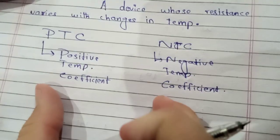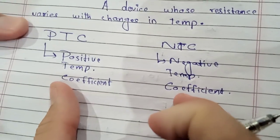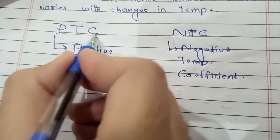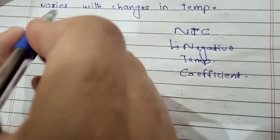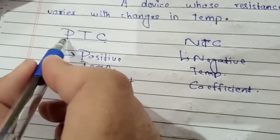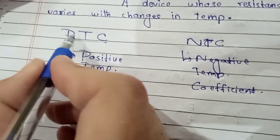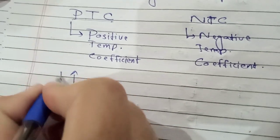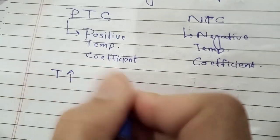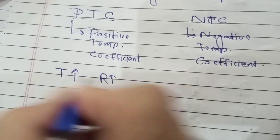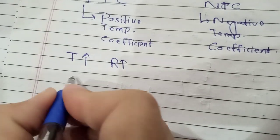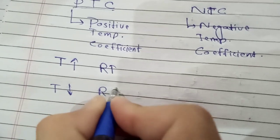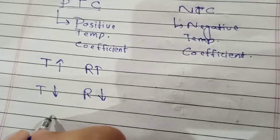The basic difference between the two: PTC is a type of thermistor where, when we increase the temperature, the resistance increases correspondingly. If we increment the temperature of its environment, the resistance increases accordingly. Vice versa, if you reduce the temperature, the resistance also begins to fall.